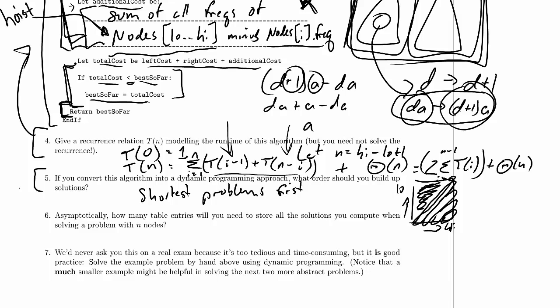Welcome to Computer Science 320 2014 Winter 2 Midterm 2 Practice Problem Screencast number 6.6. Asymptotically, how many table entries will you need to store all the solutions you compute when solving a problem with n nodes?